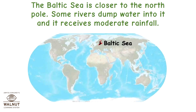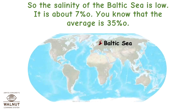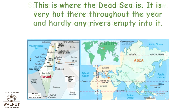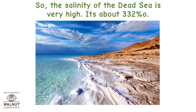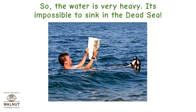The Baltic Sea is closer to the North Pole. Some rivers dump water into it and it receives moderate rainfall, so the salinity of the Baltic Sea is low — about 7 per 1000, compared to the average of 35 per 1000. The Dead Sea is very hot throughout the year and hardly any rivers empty into it, so its salinity is very high — about 332 per 1000. The water is very heavy, making it impossible to sink in the Dead Sea.